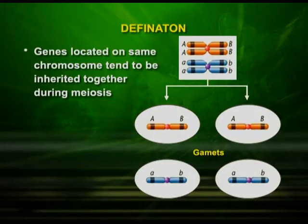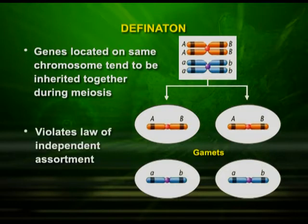So where were the recombinants? Only the parental types appeared along with one recessive type. Here we can define linkage: the genes which are located on the same chromosome tend to be inherited together during meiosis. This violates the law of independent assortment given by Mendel.